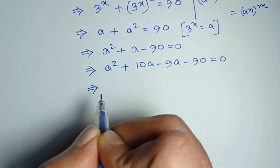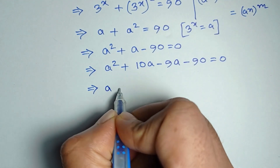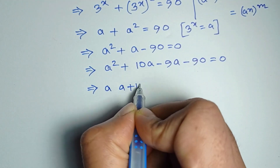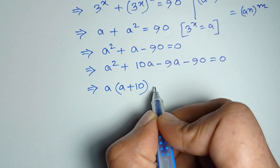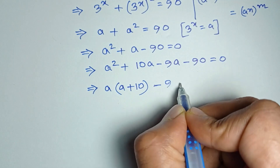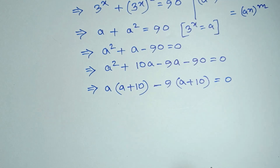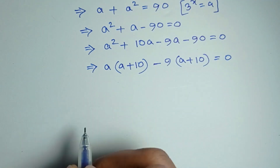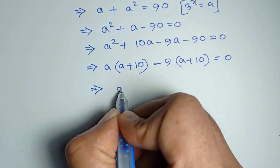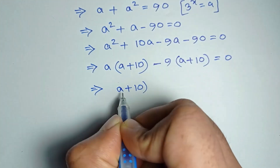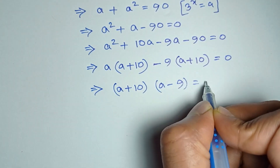If we take a common from the first two terms, then a into (a plus 10), and taking 9 common from the last two terms, we get minus 9 into (a plus 10) is equal to 0. Taking (a plus 10) common, we get (a plus 10) into (a minus 9) is equal to 0.